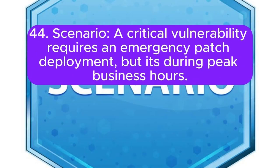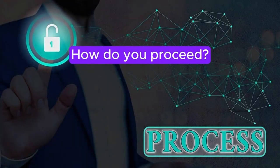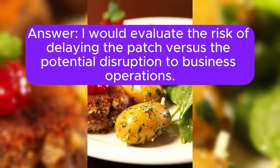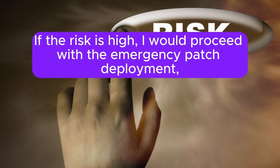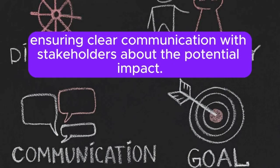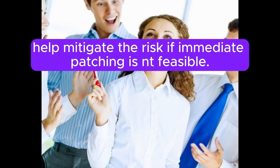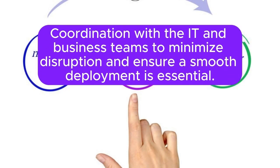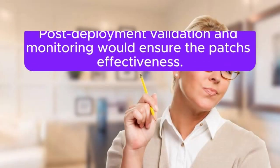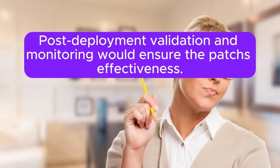Scenario 44: A critical vulnerability requires an emergency patch deployment, but it's during peak business hours. How do you proceed? I would evaluate the risk of delaying the patch versus the potential disruption to business operations. If the risk is high, I would proceed with the emergency patch deployment, ensuring clear communication with stakeholders about the potential impact. Implementing compensating controls such as enhanced monitoring and access restrictions could help mitigate the risk if immediate patching isn't feasible. Coordination with the IT and business teams to minimize disruption and ensure a smooth deployment is essential. Post-deployment validation and monitoring would ensure the patch's effectiveness.